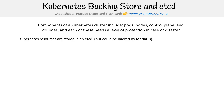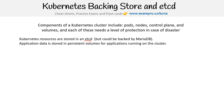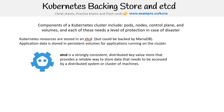What Kubernetes does is it stores the state data inside something called etcd, which is a key-value store, which we'll talk about in a moment. But it is possible to use a different backing storage like MariaDB — I have no idea how, but I know that it's possible. Application data is stored in persistent volumes for applications running on clusters, but understand that the resources — the state of those — are stored in a key-value store.